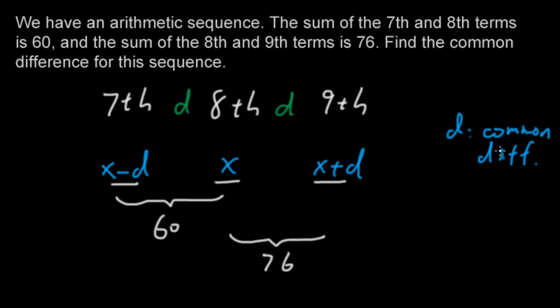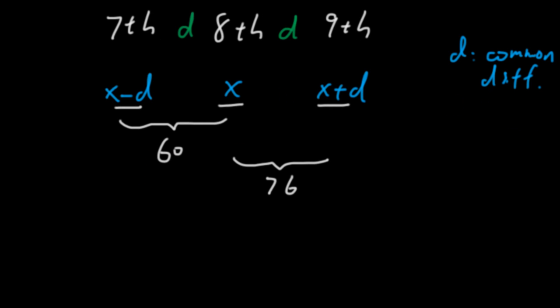Then we try to write out this relationship. The 7th and 8th term add up to be 60. So we have x minus D plus x equals 60. And this is the 7th term, this is the 8th term.